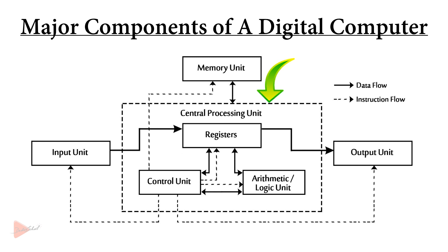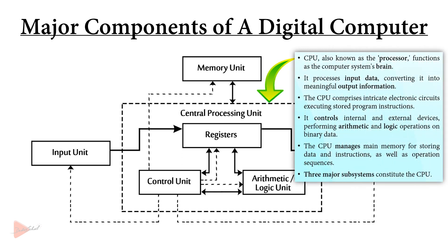First, let's talk about the CPU. The CPU, also referred to as the processor, serves as the computer system's brain, responsible for processing input data and transforming it into meaningful output information. This intricate component is a highly complex collection of electronic circuits that execute stored program instructions. The CPU controls all internal and external devices, carrying out arithmetic and logic operations exclusively on binary data comprised of ones and zeros.